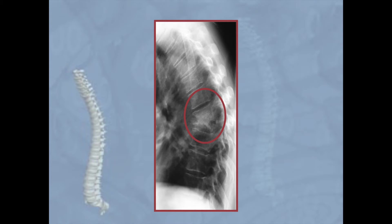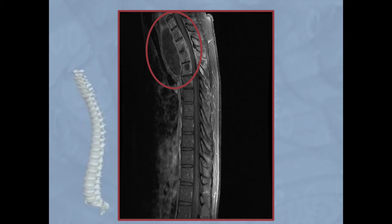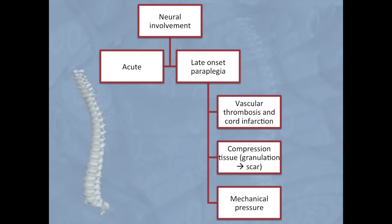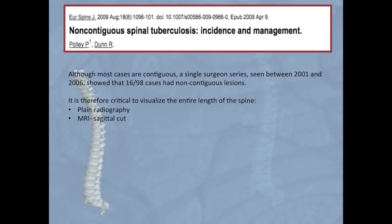This X-ray depicts erosion of contiguous vertebrae accompanied by disc space narrowing. Kyphos formation may also develop. The infection produces pus, which can be paravertebral as demonstrated in this MRI. Alternatively, the pus can collect in the spinal column. Neural involvement can occur acutely or with late onset. Late-onset paraplegia is often due to vascular thrombosis and infarction, compression as granulation tissue becomes scar tissue, and mechanical pressure.